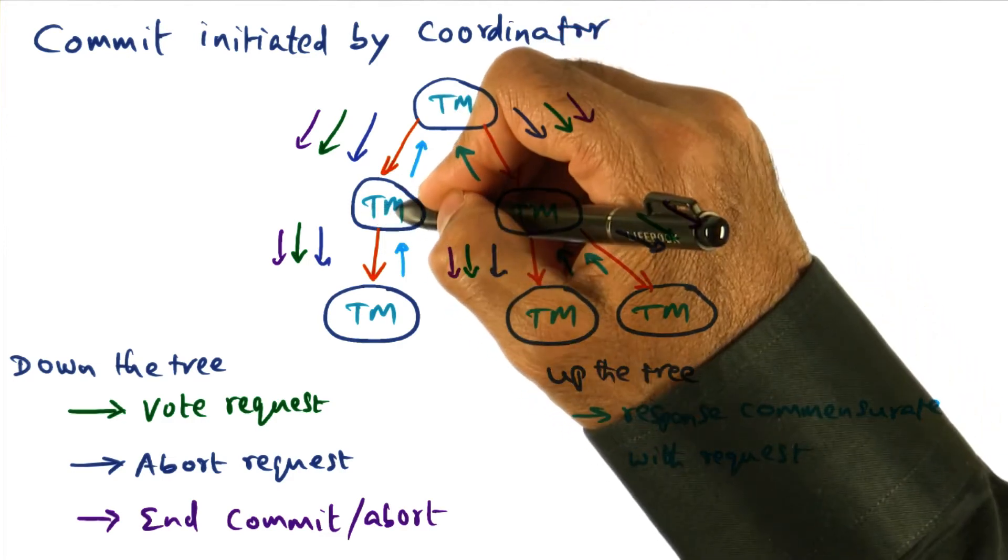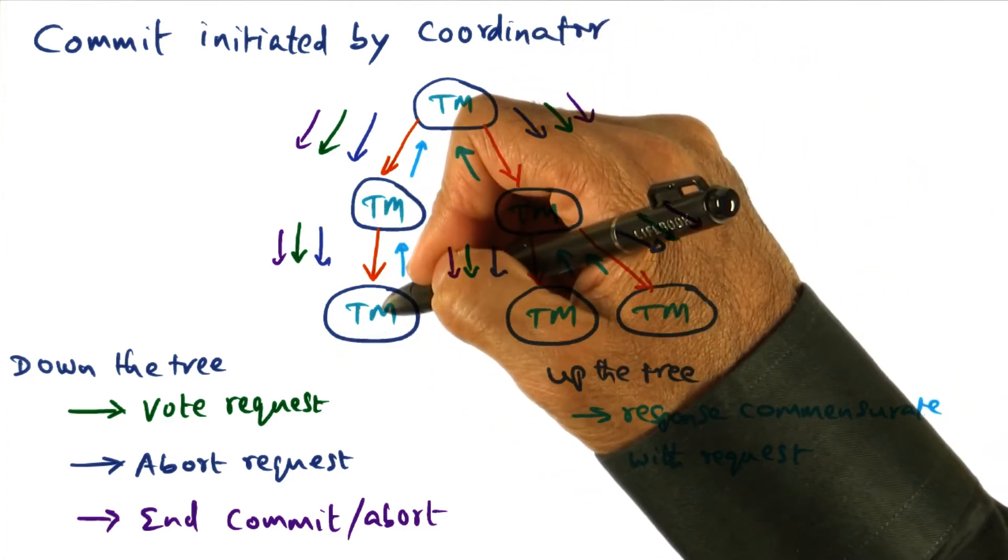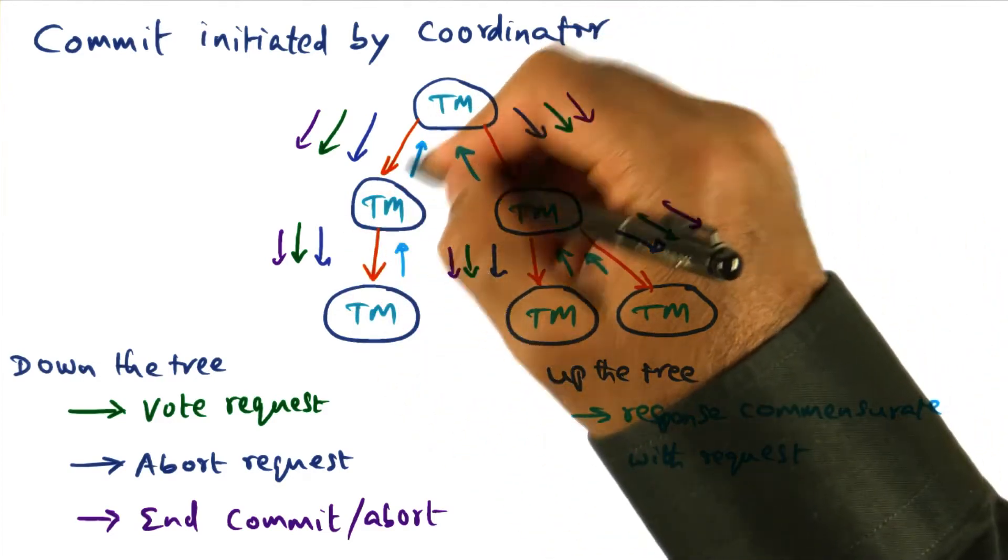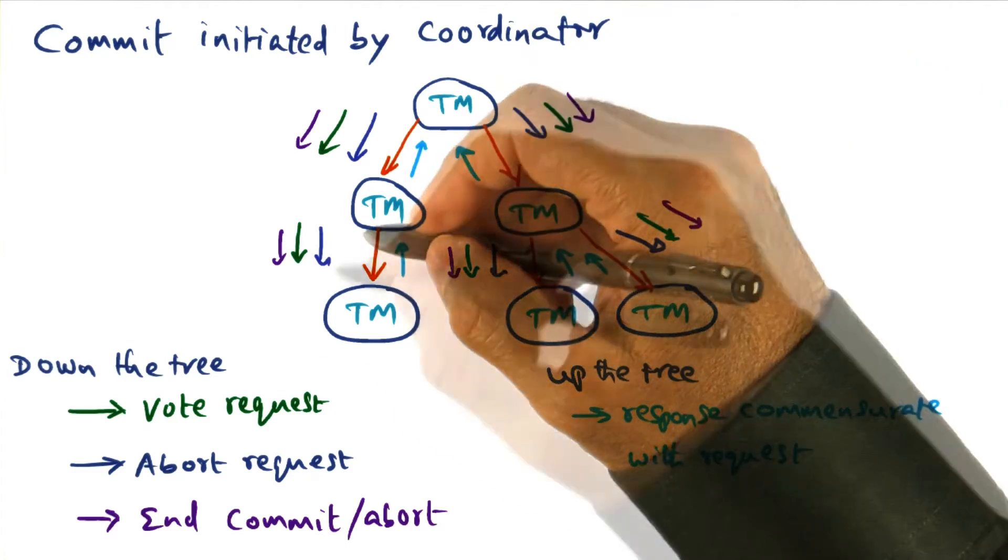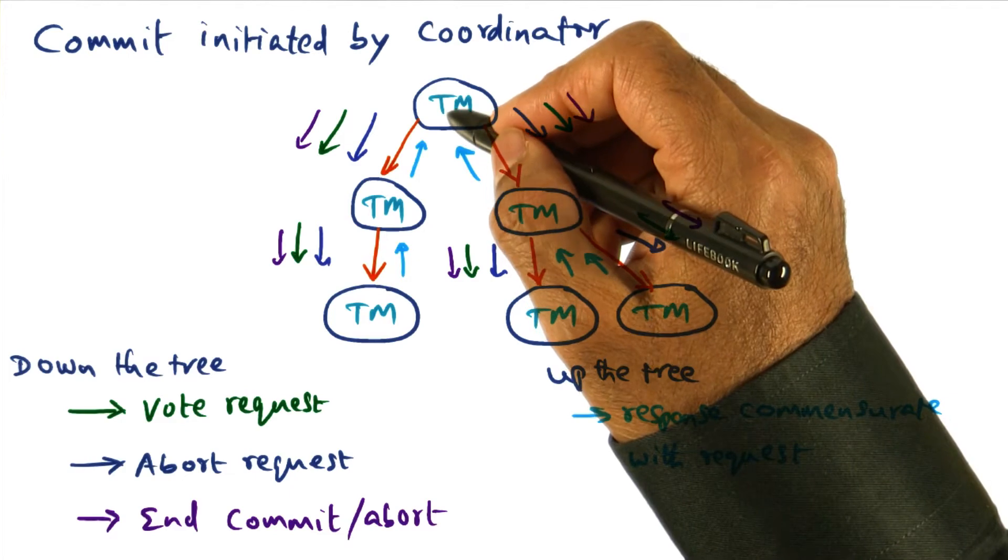For instance, it could be a directory manager, it could be data servers that are hosting those files and so on. All of those transaction managers will get contacted by the coordinator through this transaction tree with a request to abort that particular transaction ID.